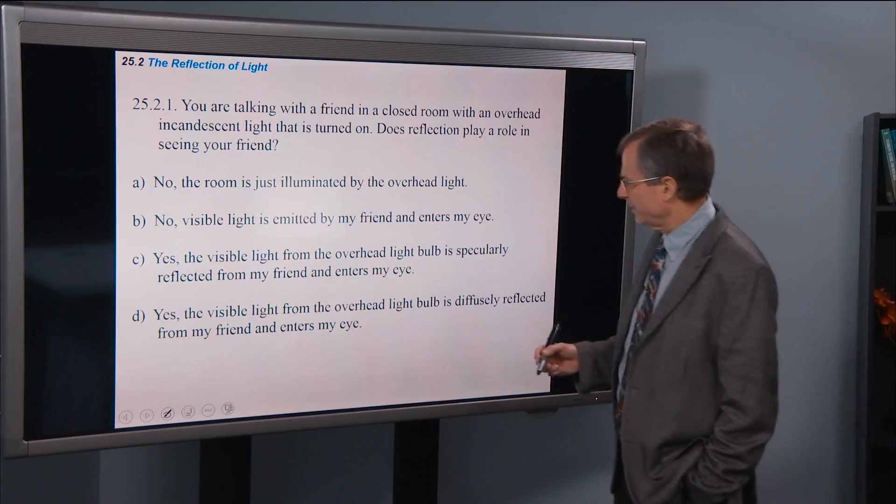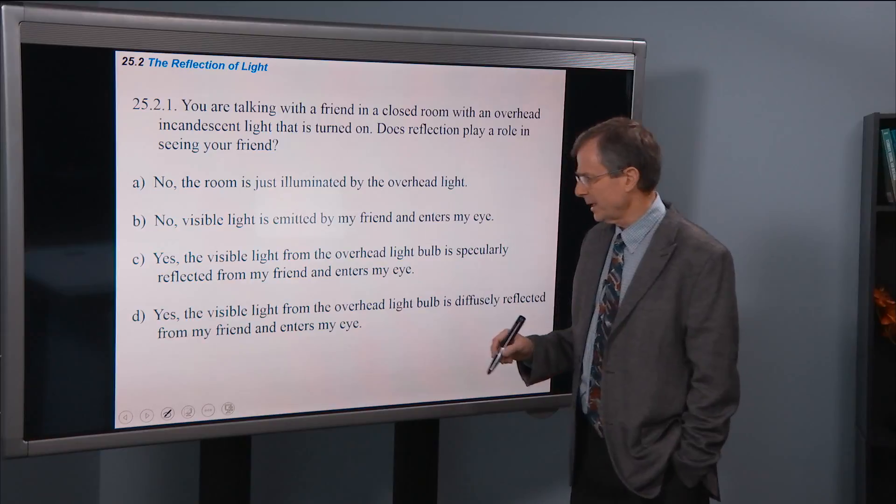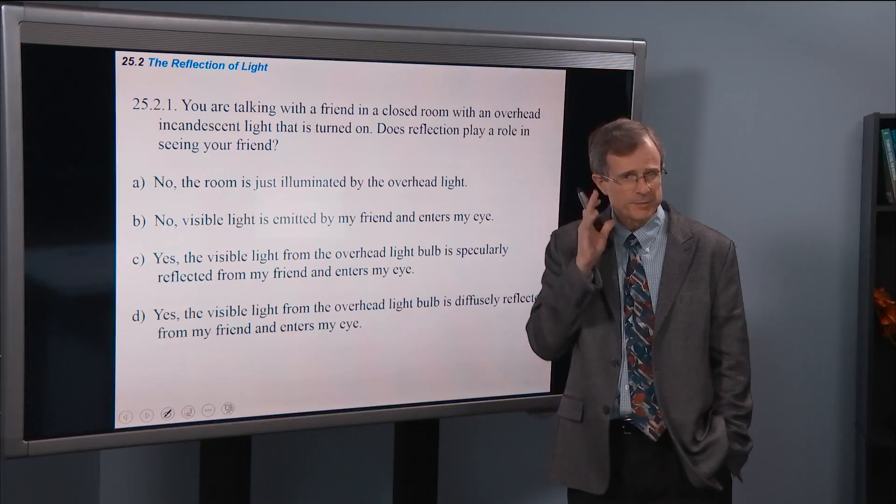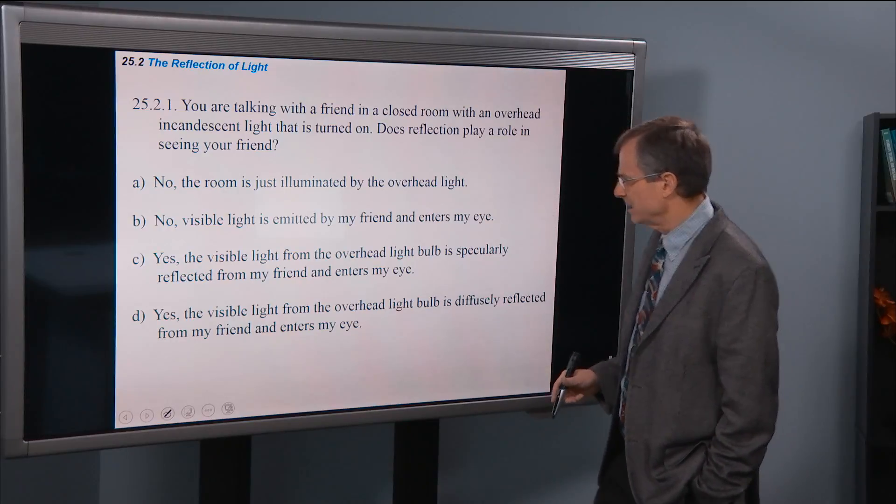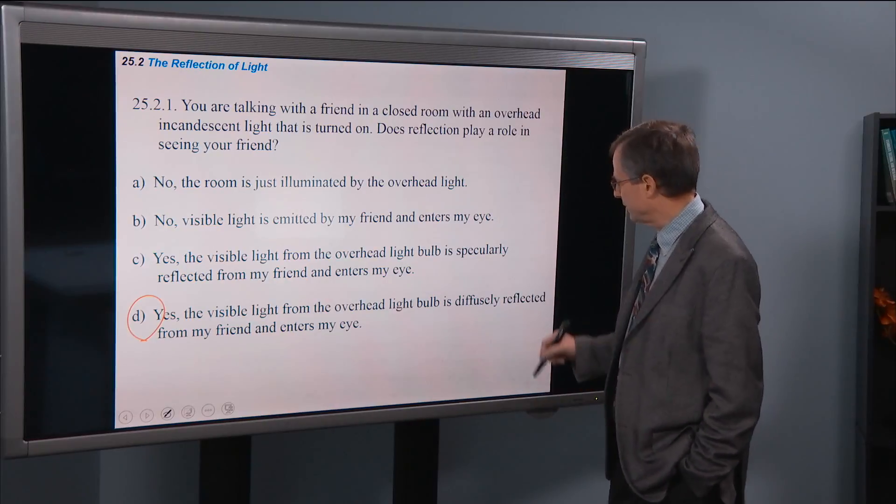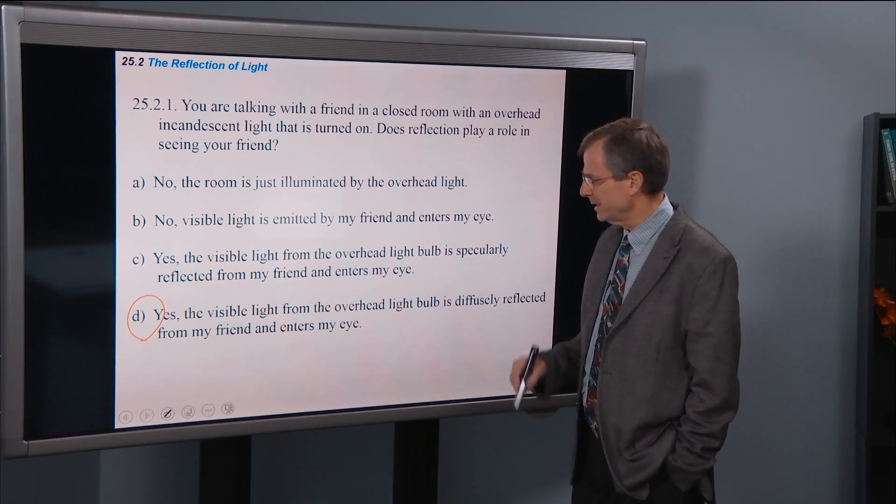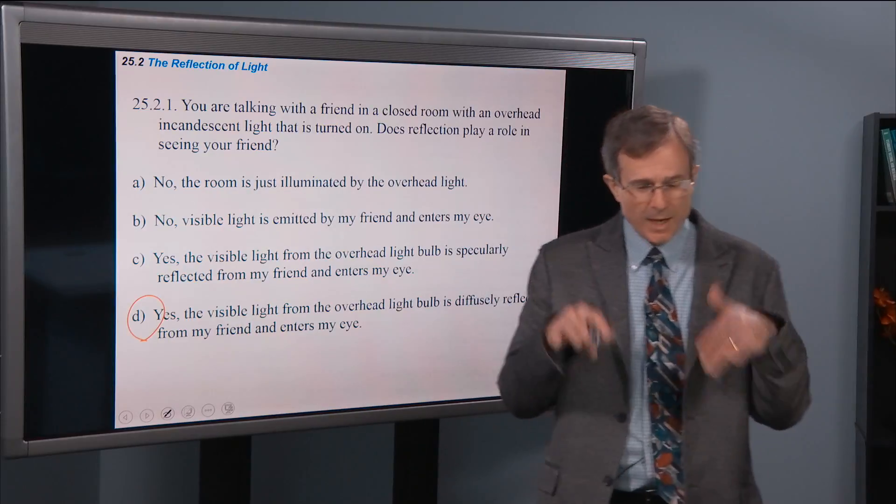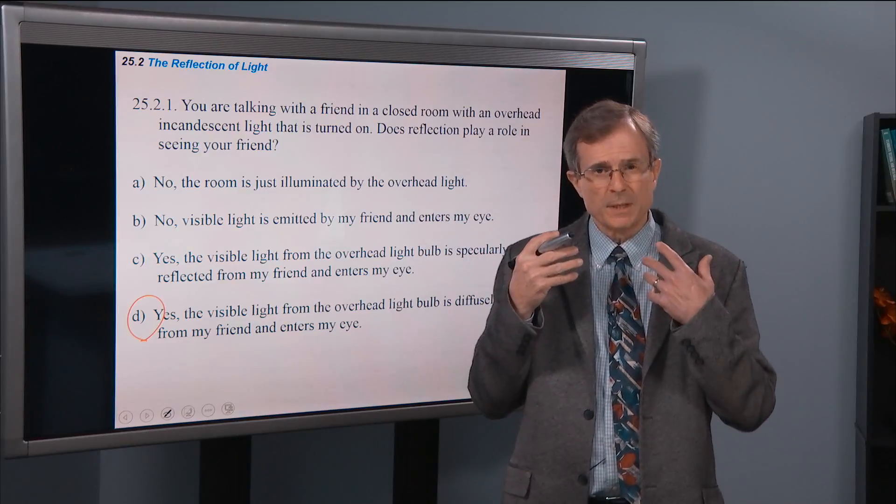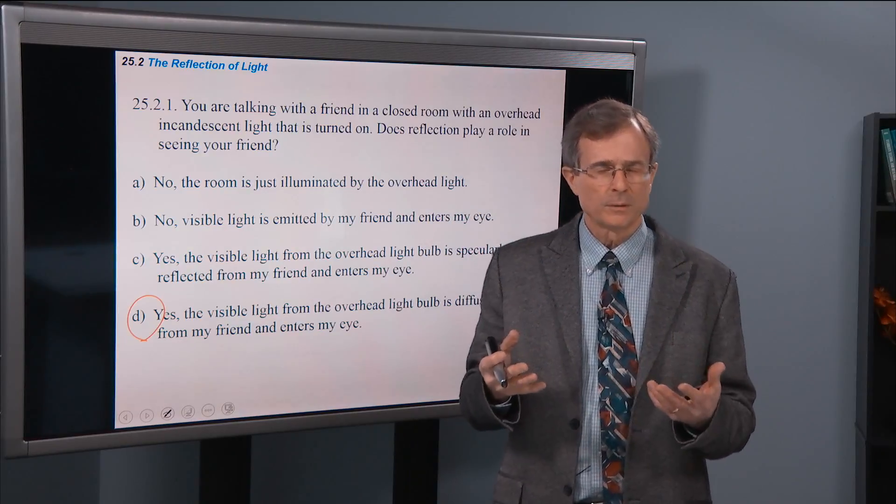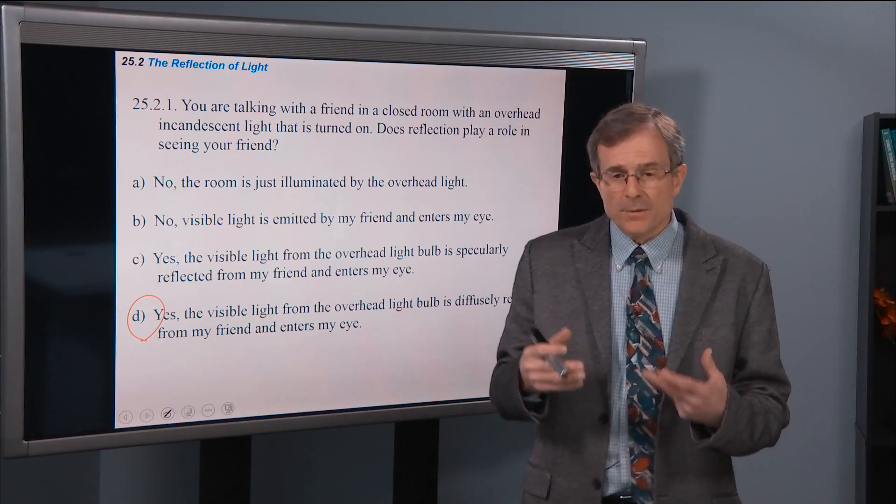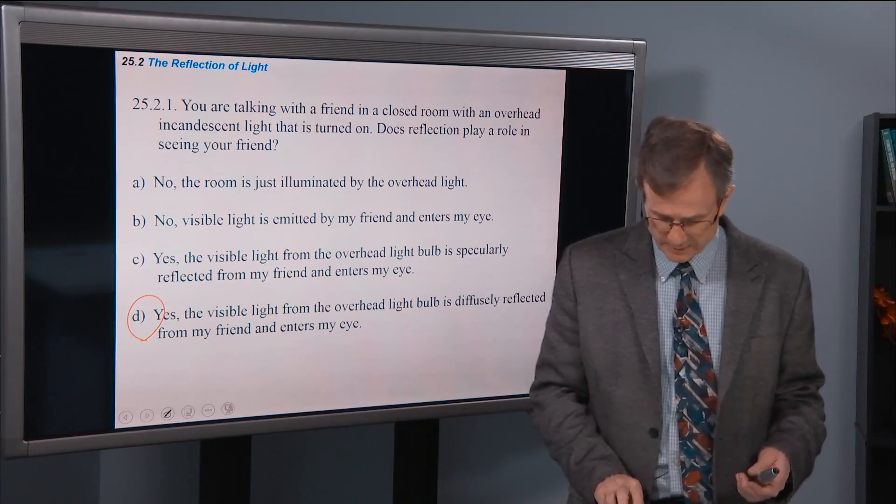Yes, the visible light from the overhead light bulb is specularly reflected from my friend and enters my eye. Well, it's not really a specular reflection from a rough surface of your friend's face. Instead, the visible light from the overhead light bulb is diffusely reflected from my friend and enters my eye. And how do you know that? If you turn the lights off, you're not going to be able to see your friend. So the only way you can see your friend, since he doesn't emit any visible, or at least a miniscule amount of visible light on his own, then the way that you can see him is by that diffusely reflected light.